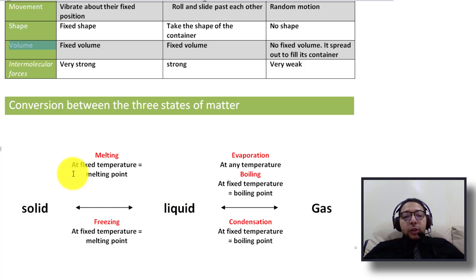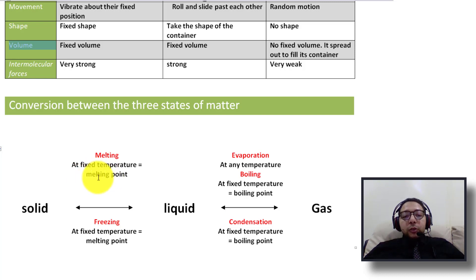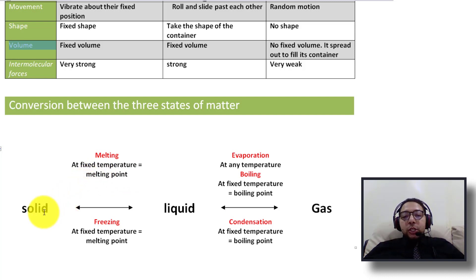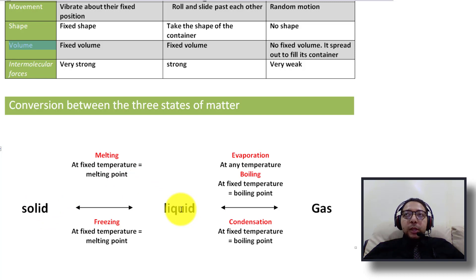Changing solid to liquid is called melting. The solid melts at a fixed temperature, which is called the melting point. For example, ice changes into water at zero degrees Celsius, which is the melting point of ice.